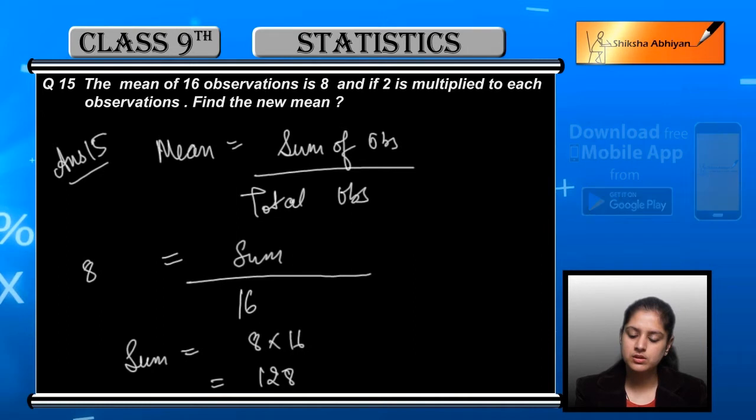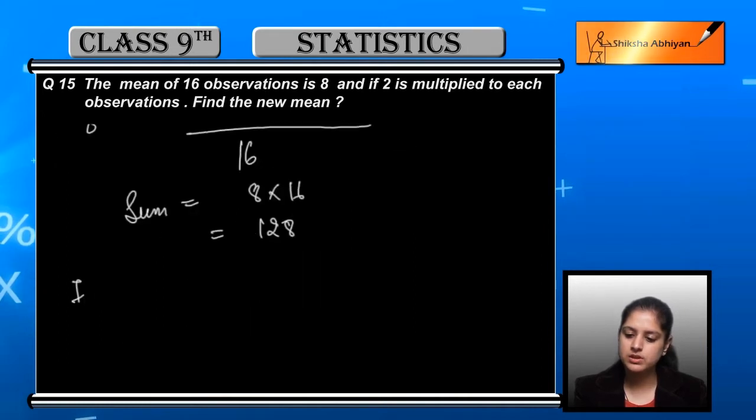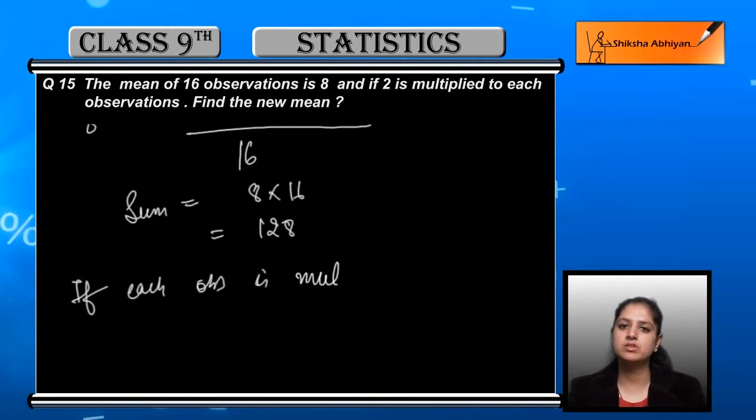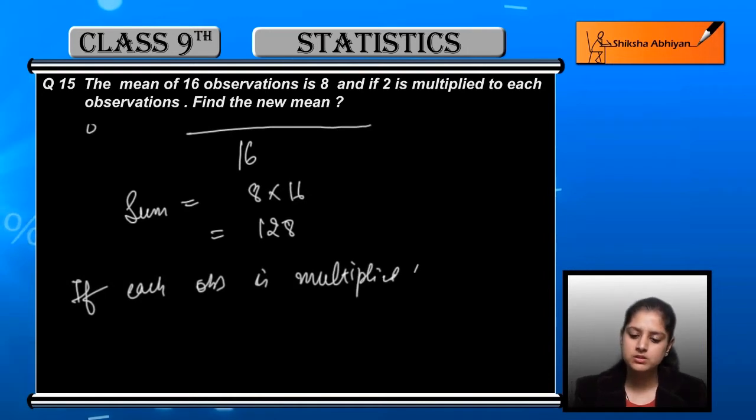If each observation is multiplied by 2, we must multiply the total sum. So the new sum equals 2 into 128.